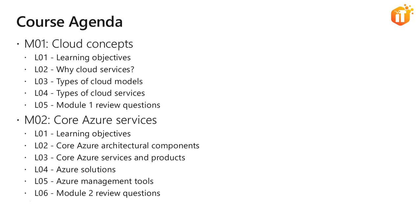The next topic covered in this course is core Azure services. We will get a flavor of all the different types of core Azure services, starting with understanding the architectural components of Azure — how regions are separated, what is an availability zone, what is a resource group, and what is Azure Resource Manager. Then we will discuss core products available in Azure for compute, such as virtual machines, virtual machine scale sets, app service and functions.